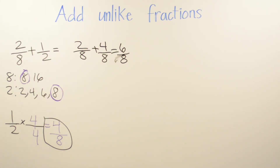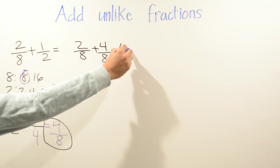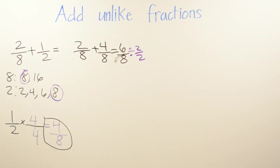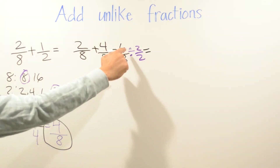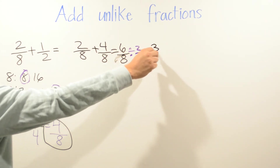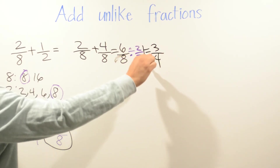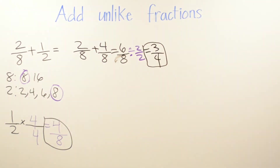Now we add: 2 plus 4 is 6, over 8. Some teachers will allow you to leave it as 6/8, but some will ask you to simplify. Since both numbers are even, I divide by 2: 2 goes into 6 three times, and 2 goes into 8 four times. So our answer is three over four.